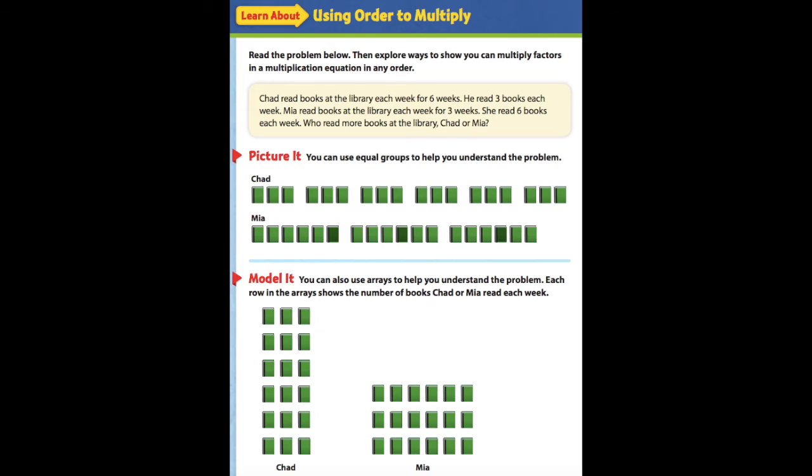So what they want us to do is figure out who read more books. We could count the books, we could use our repeated addition skills that we have, or we could even multiply. But what we also can do is use our arrays that we've learned about.